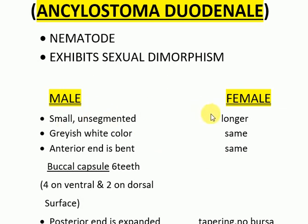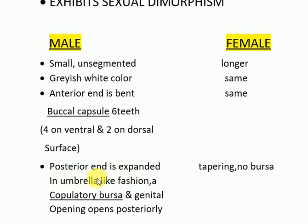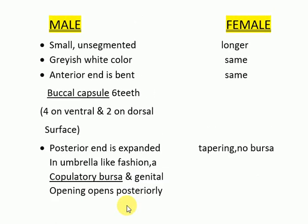The female is a bit longer; both of them are grayish white in color, but in fresh specimens they appear reddish brown due to ingested blood in the intestinal tract. In both male and female, the anterior end is bent to form a buccal capsule having six teeth — four on the ventral and two on the dorsal surface. In the male, the posterior end is expanded in an umbrella-like fashion with a copulatory bursa, and the genital opening opens posteriorly.